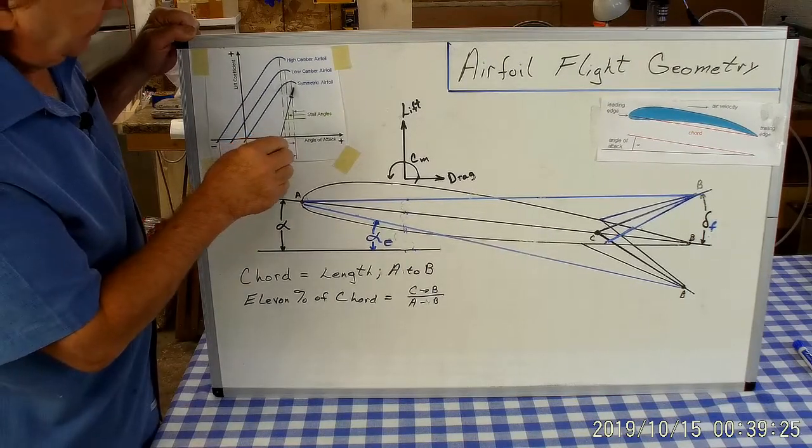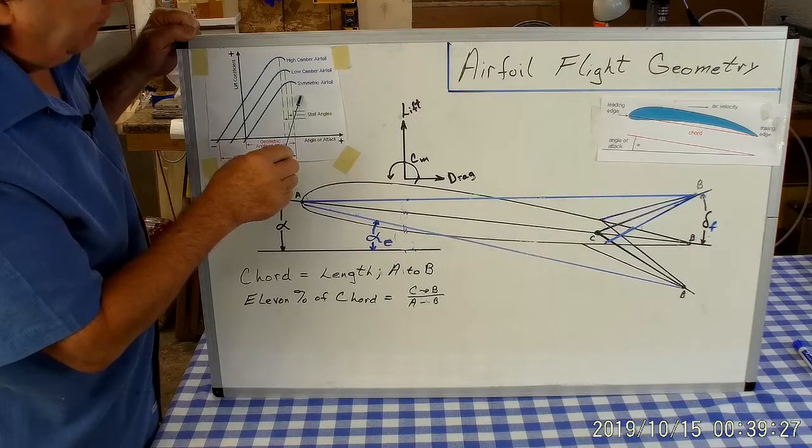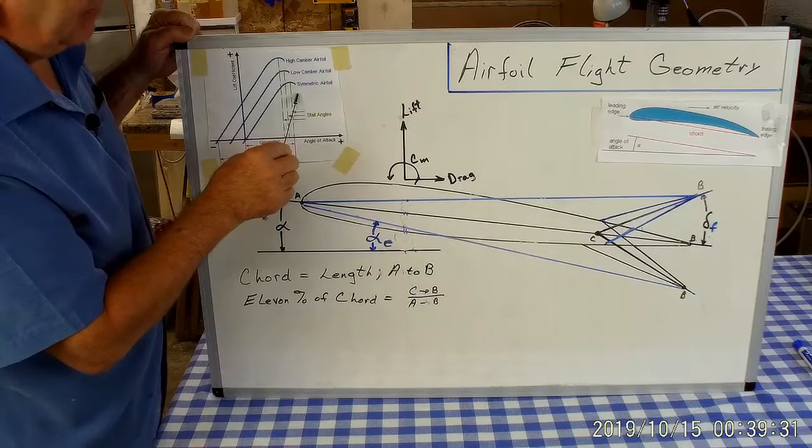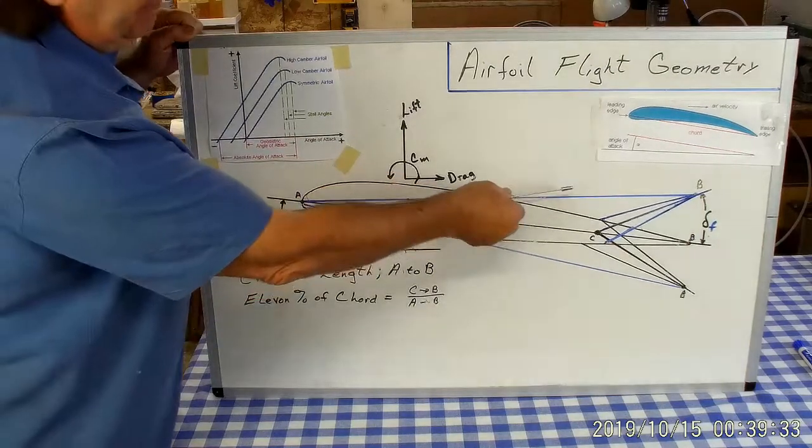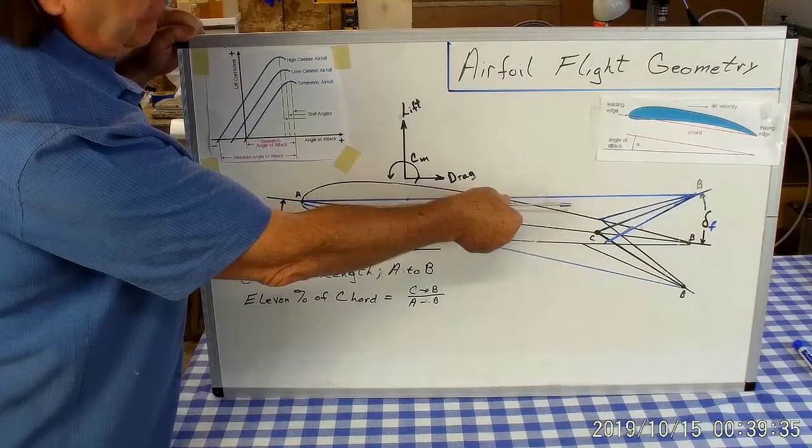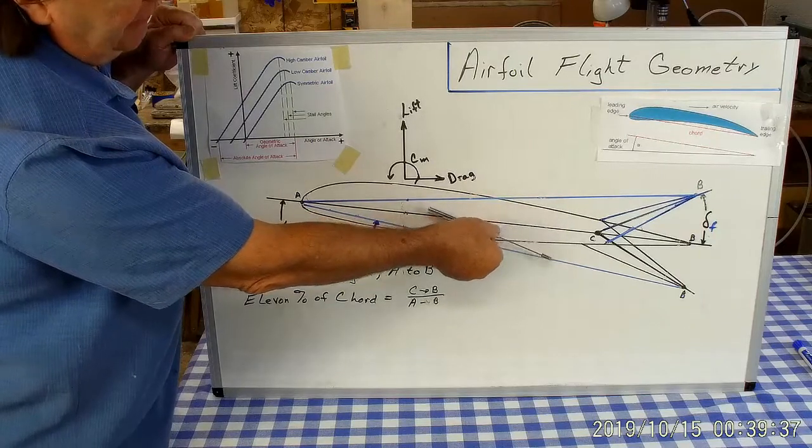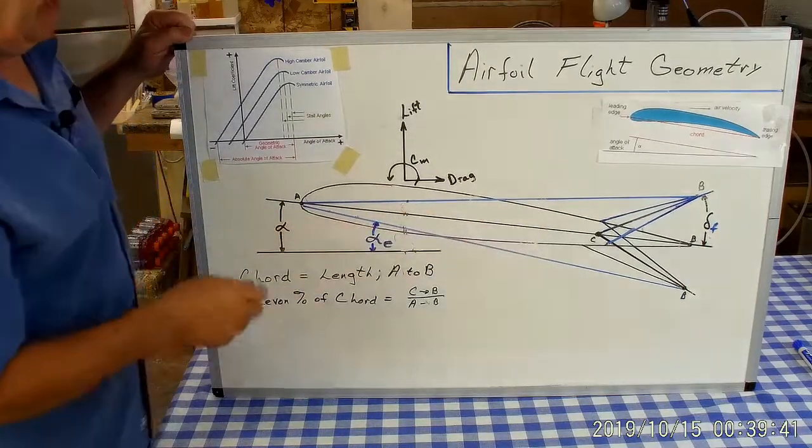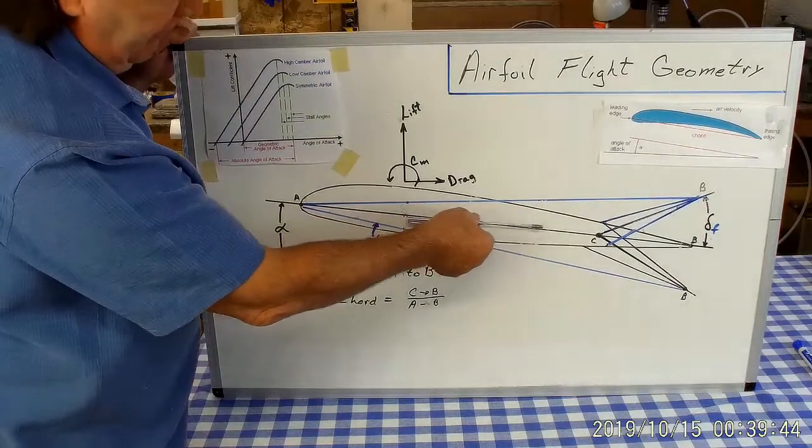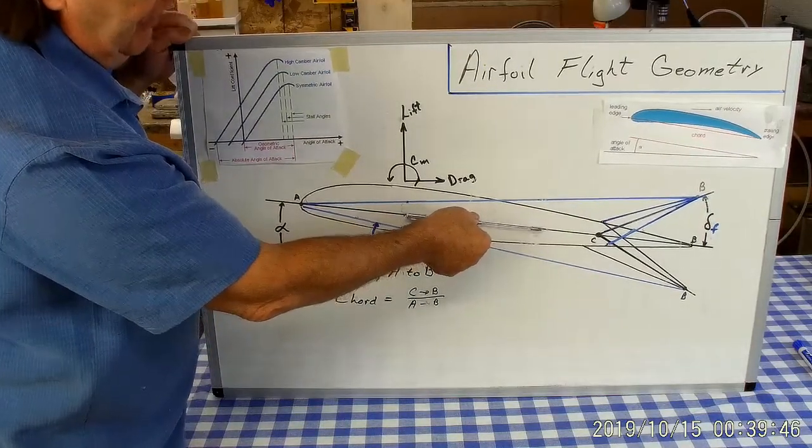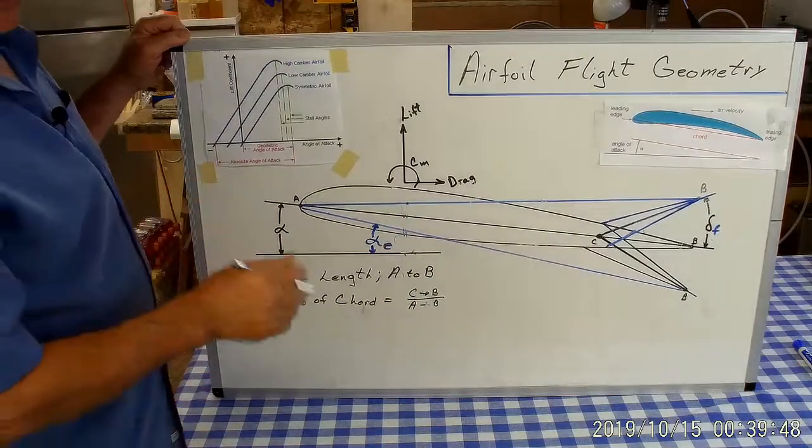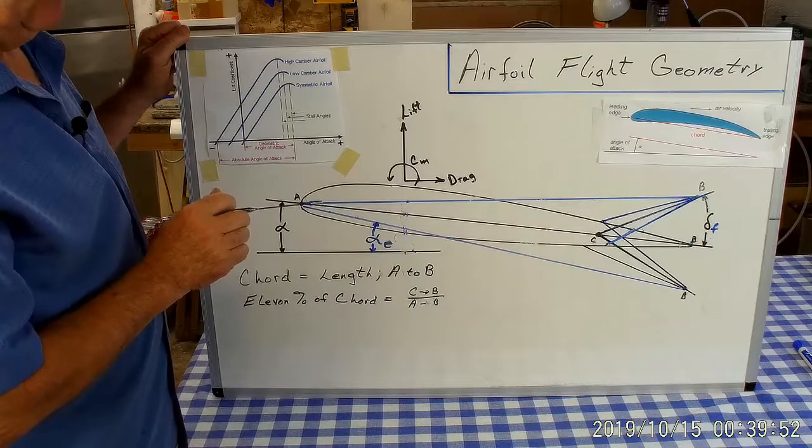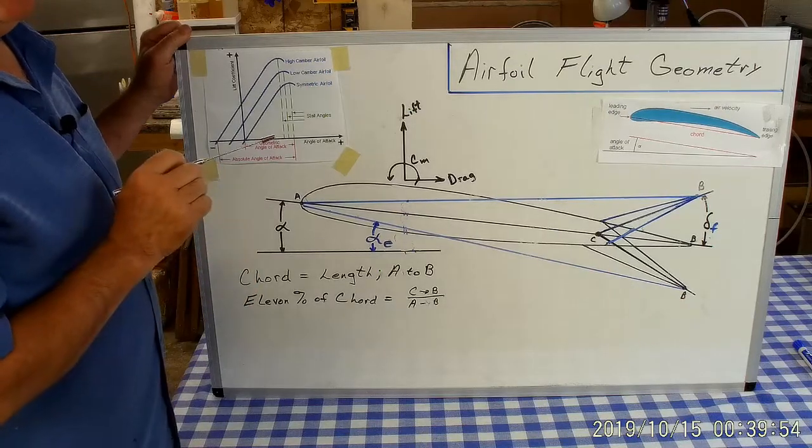Likewise, you'll generate less lift, but that airfoil will go to a higher angle of attack before it stalls. That makes sense because our effective cord line is now up here, so we can rotate this airfoil even further before it stalls. That's because we're measuring everything relative to the original cord line.